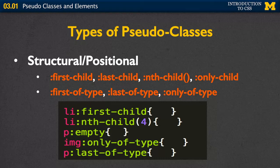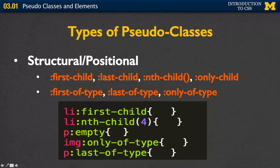With nth child, you put a number in to say the fifth child or the tenth child. You can have only child. You also have other different things such as first of type, last of type, only of type. And again, you just have the element, the colon, and then the name of the pseudo class that you want to style.